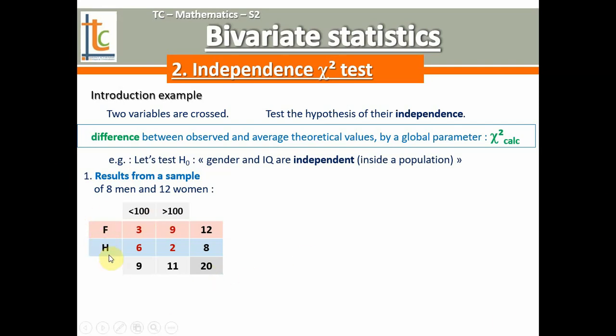For the labels — I use F and H in French: Femmes, Hommes — so women and men. 3 scored under 100 and 9 above 100 for women, and 6 and 2 for the distribution of men. No quick conclusion from that — it's just a sample, and sampling fluctuation exists in any population. Our question is: is this kind of sample that shows differences between men and women likely, or not so likely, from a population where gender and IQ are independent?